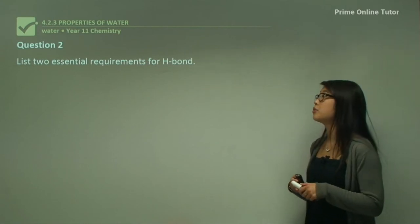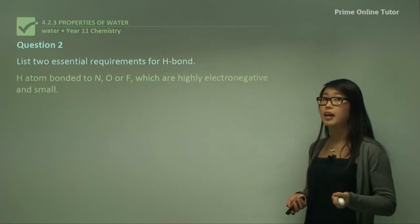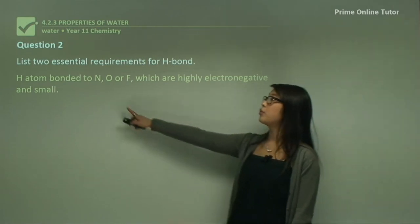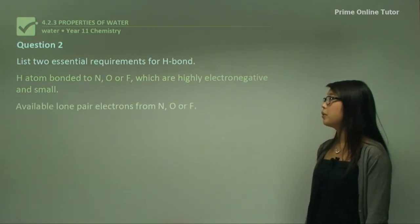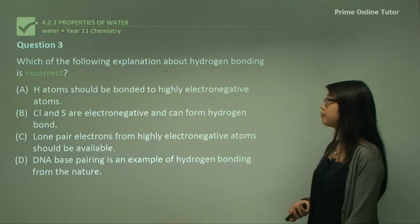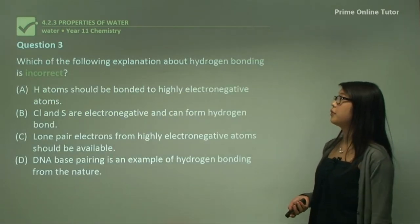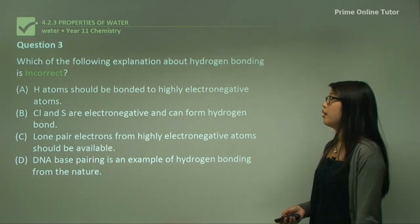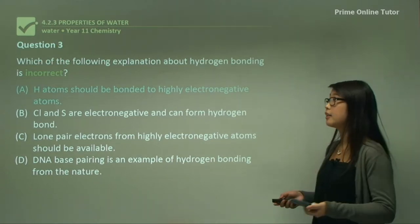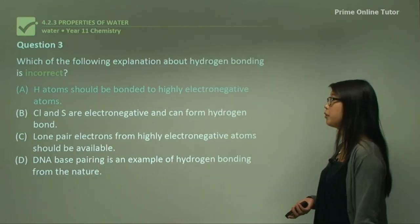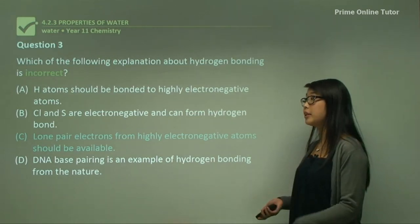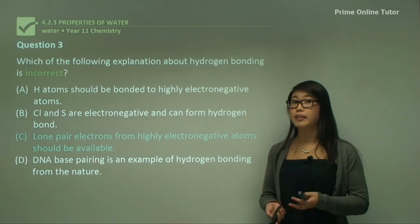Question two: list two essential requirements for hydrogen bonds. Firstly, a hydrogen must be bound to a highly electronegative but small electronegative atom — nitrogen, oxygen, or fluorine are the usual ones. Secondly, they need to have a lone pair available for bonding with the hydrogen so they can attract together. Question three asks which explanation about hydrogen bonding is incorrect. Option A says hydrogen atoms should be bonded to highly electronegative atoms — yes, that's correct, because without it we won't get polarity on the bond. Option C says lone pair electrons from highly electronegative atoms should be available — yes, we need lone pairs; without them we only get dipole-dipole interactions.